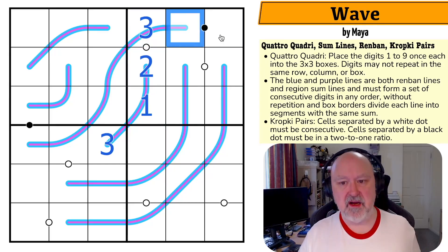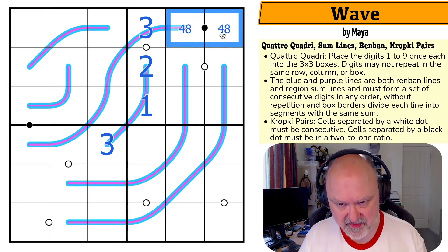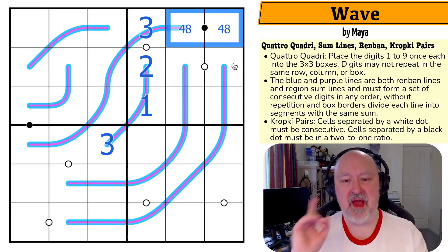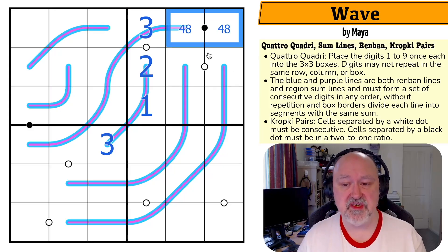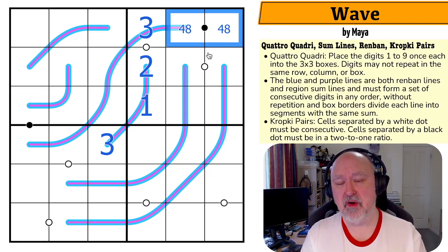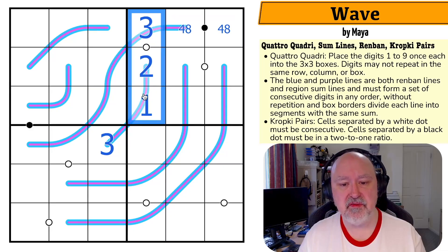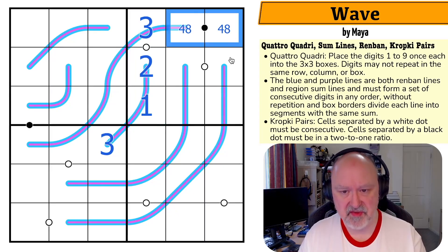We've got a start. We also know what is on this line - this is four, eight. On a black dot, because we're working with digits one to nine, you can only put a low digit and its double: one doubles to two, two doubles to four, three doubles to six, four doubles to eight - but five can't double to ten. We don't have one, two, or three available, so this is four, eight.